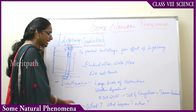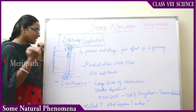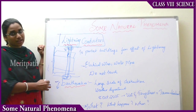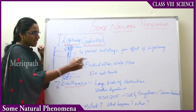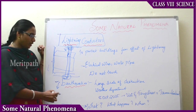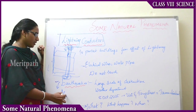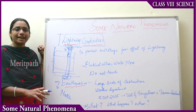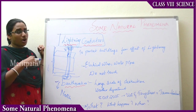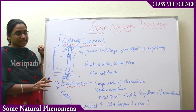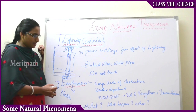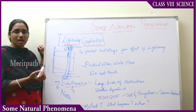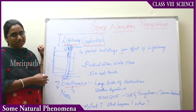One major earthquake occurred at the end of October 2005 in Uri and Tangdhar, in the North Kashmir region. It caused a huge disaster that no one had predicted, leading to massive loss of life and properties. This is one of the major earthquakes witnessed in recent past years. Now let us understand the reasons and causes behind earthquakes.